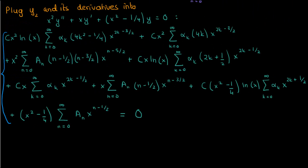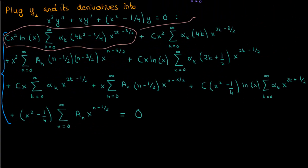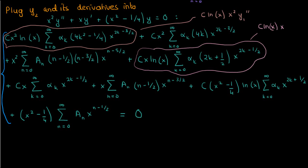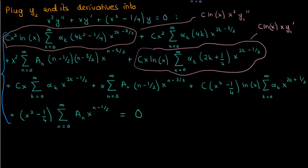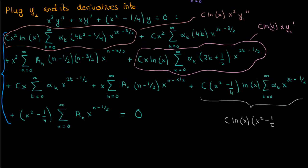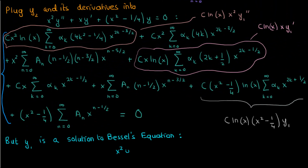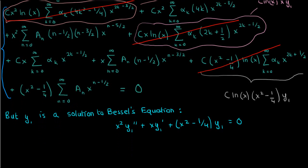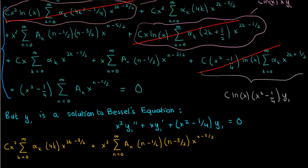Going back to the expression from plugging y2 into Bessel's equation, the first expression is c ln x times x squared times y1 double prime, the fourth is c ln x times x times y1 prime, and the seventh is c ln x times (x squared minus 1/4) times y1. But y1 solves Bessel's equation, so x squared y1'' plus x y1' plus (x squared minus 1/4) y1 equals 0. These terms cancel, leaving a simpler expression.